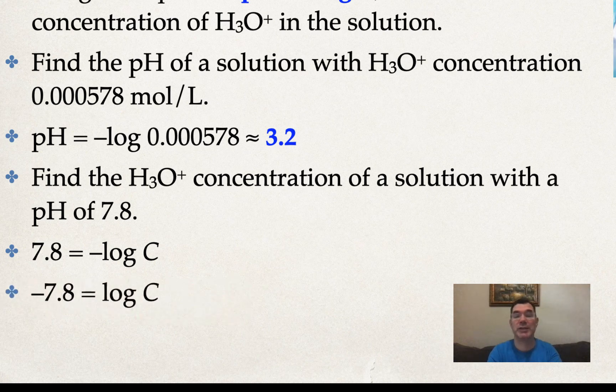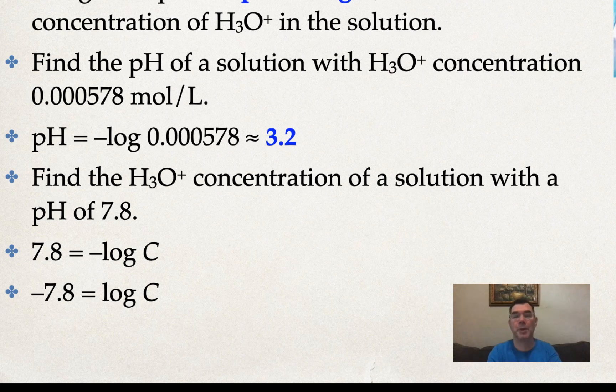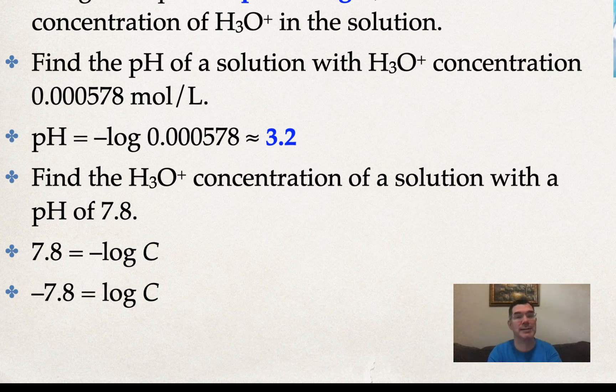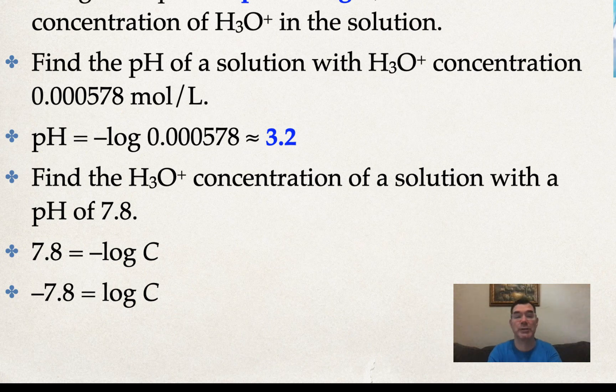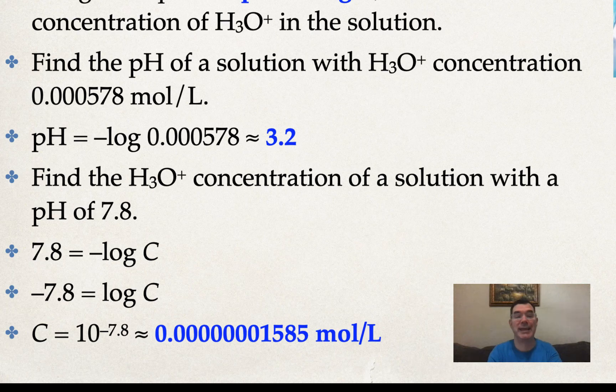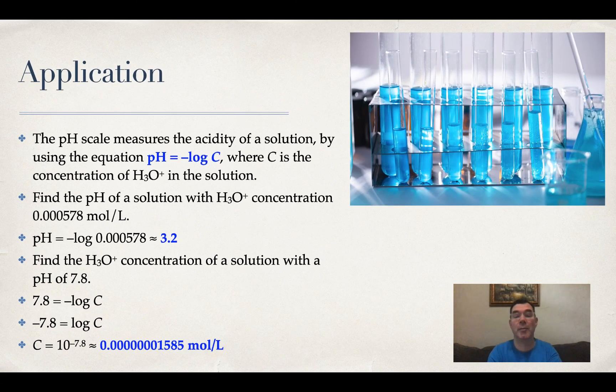So first I changed the sign on both sides. Now, how do I undo log? Well, to undo log, you basically raise both sides as an exponent of 10, just like you would with any other base. If it was log base 2, you would raise both sides as an exponent of 2. But now since we're dealing with base 10, I'm raising both sides as an exponent of 10. So C is going to be 10 to the negative 7.8, which is that number there, moles per liter.